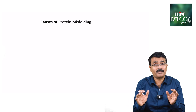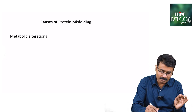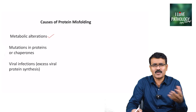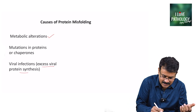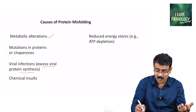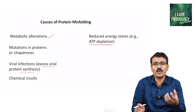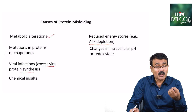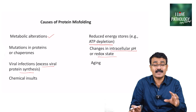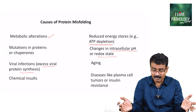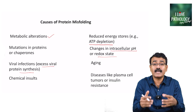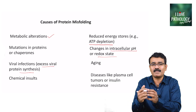What are the causes of protein misfolding? It could be metabolic alterations, mutations in the proteins or the chaperones, viral infections — particularly excess viral protein synthesis — various chemical insults, or reduced energy stores. Whenever you have ATP depletion, there will be no energy for the proteins to be folded. It could also be because of changes in the intracellular pH or the redox state. Aging is an important mechanism, and diseases like plasma cell tumors or insulin resistance are conditions where proteins can be misfolded.